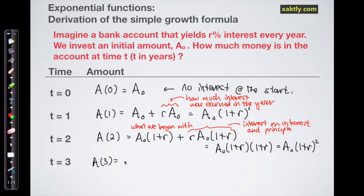All right, let's go to the end of year three. We started the year with A naught times one plus r squared and we're going to earn r times that. And if we look at that, we have a factor of A naught times one plus r squared in each term, which we can factor out multiplied by one plus r. And so we get A naught times one plus r cubed.